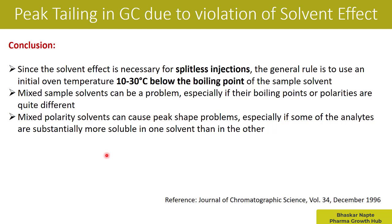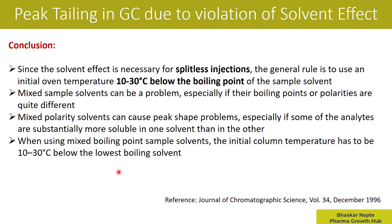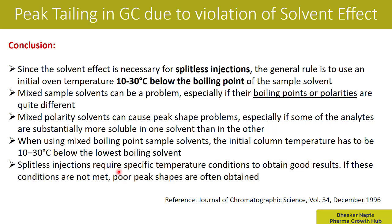The third point: mixed polarity solvents can cause peak shape problems, especially if some analytes are substantially more soluble in one solvent than in the other — for example a non-polar solvent like ethyl acetate combined with a polar solvent like water. If there is a difference in polarity and the analyte has different solubility between the two solvents, you can have a problem with peak shape. When using mixed boiling point sample solvents, the initial column temperature should be 10 to 30 degrees Celsius below the lowest boiling point solvent. Finally, splitless injections require specific temperature conditions to obtain good peak shape, and if these conditions are not met, poor peak shapes are often obtained.